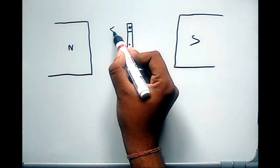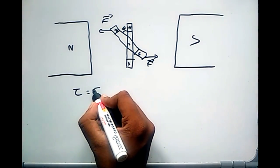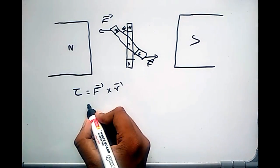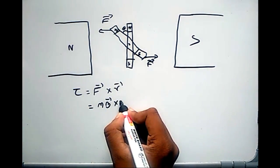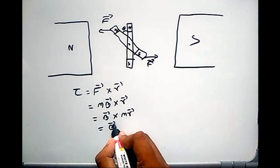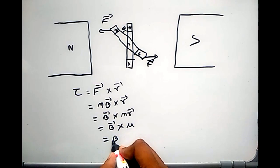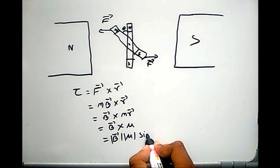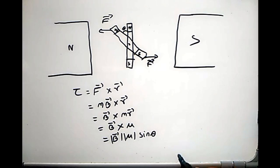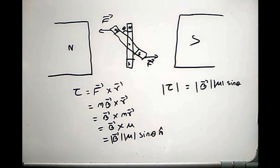The bar magnet experiences a torque. This torque is given by τ = f × r, or equivalently, τ = B_vector × p_vector = B × μ, where the magnitude is τ = Bμ sinθ n̂. Here μ is called the magnetic moment, and magnetic moment equals m·r_vector.